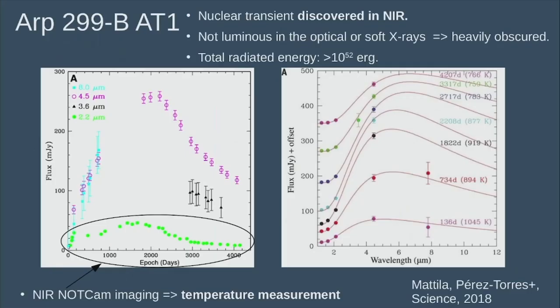An actual example is ARP299B-AT1, which was discovered in the near-infrared, back in 2005. It was not luminous at all in the optical or X-rays - so it must be very obscured. This was my supervisor's work. Here are the Spitzer light curves in the mid-infrared, and the green points are NOTCam K-band data. The x-axis is 4,400 days - this thing is really slow, it just ticks away, and we observe it with NOTCam again and again.